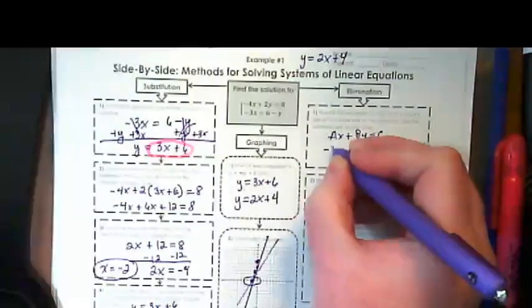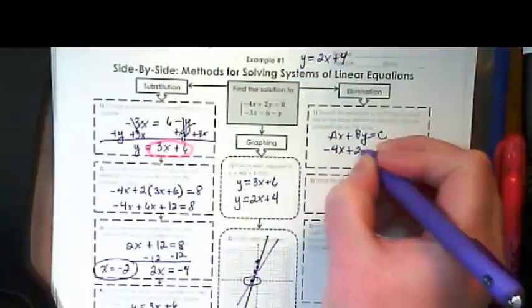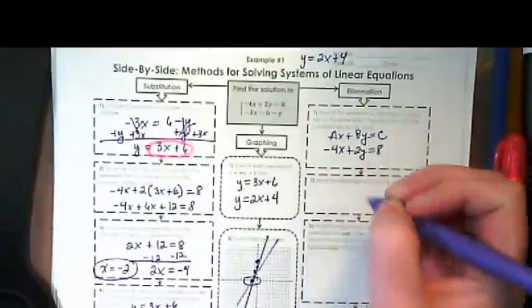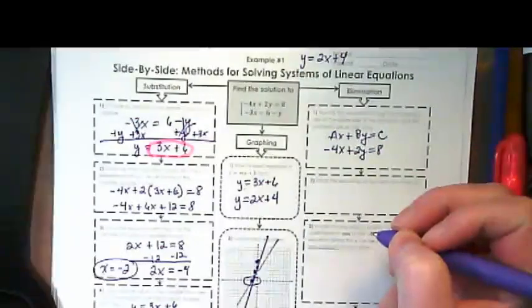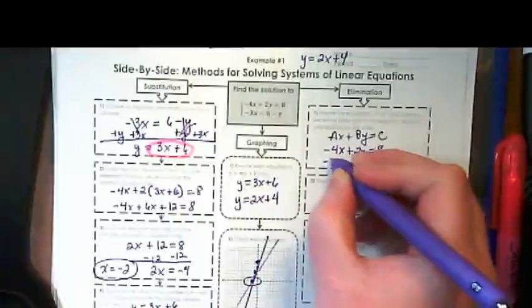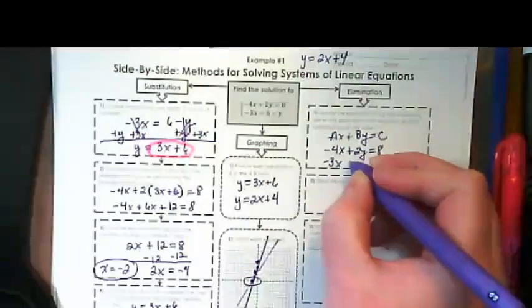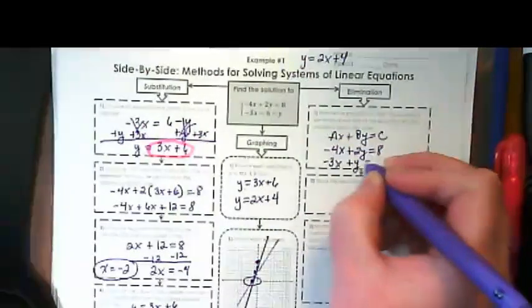The first one already is. And the second one would end up being negative 3x plus y equals 6.